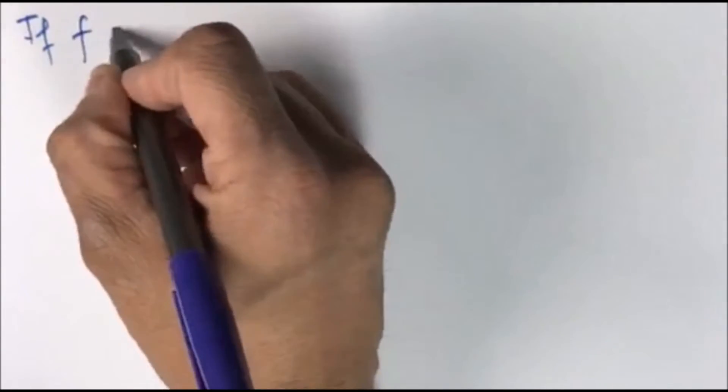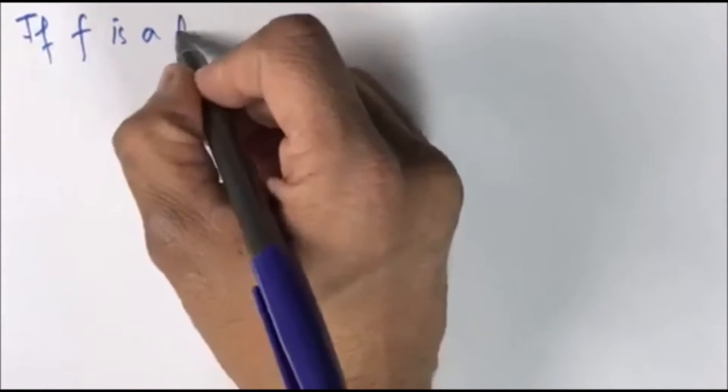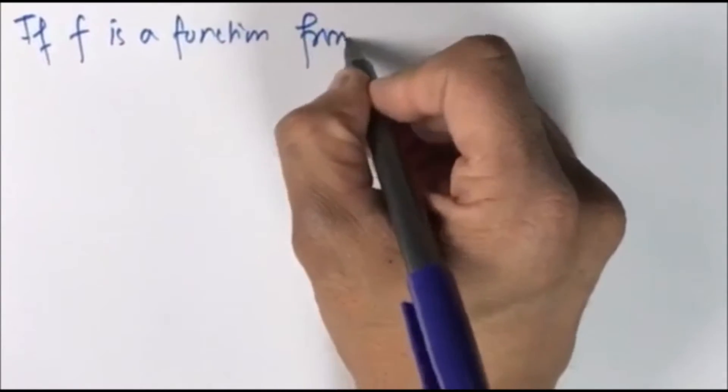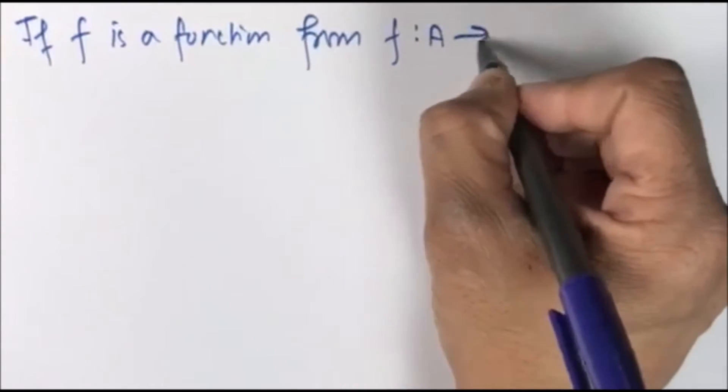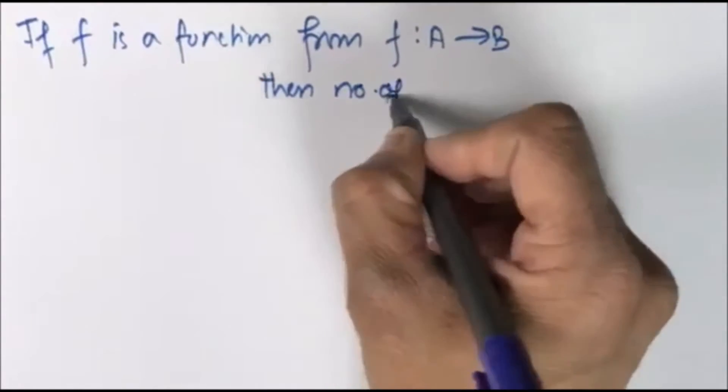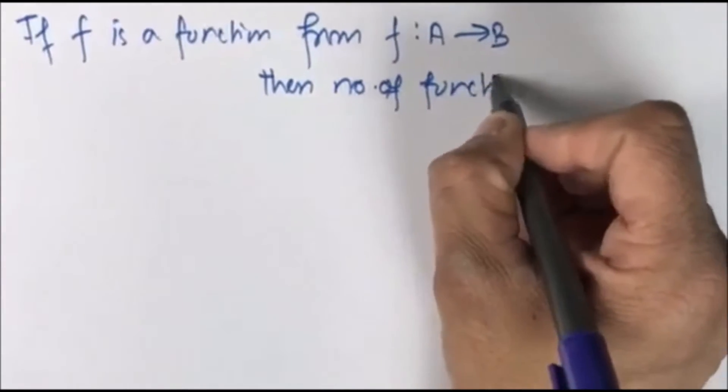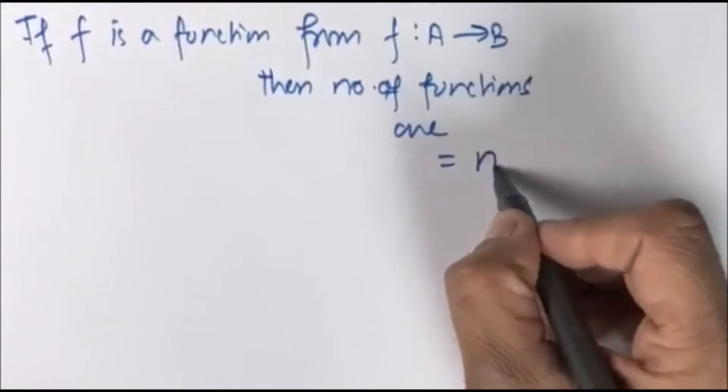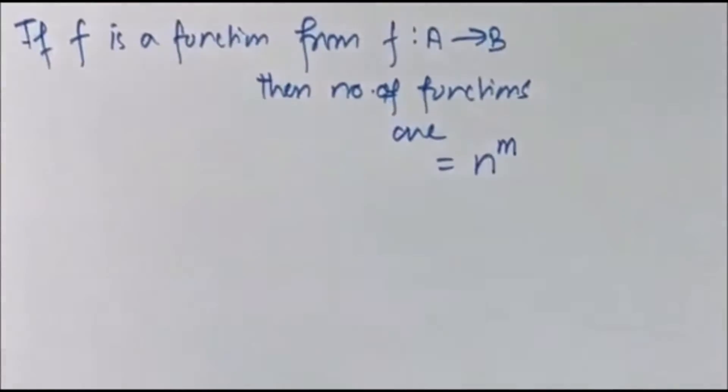If F is a function from A to B, the number of functions are N raised to power M. These include all sorts of functions, but purely functions.